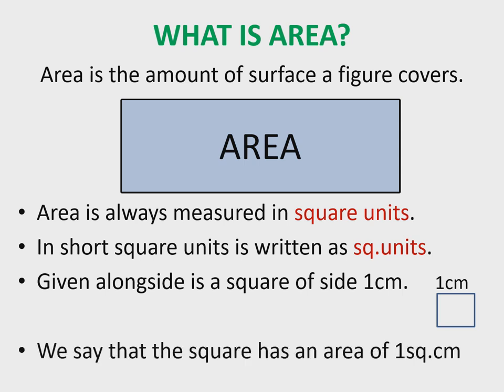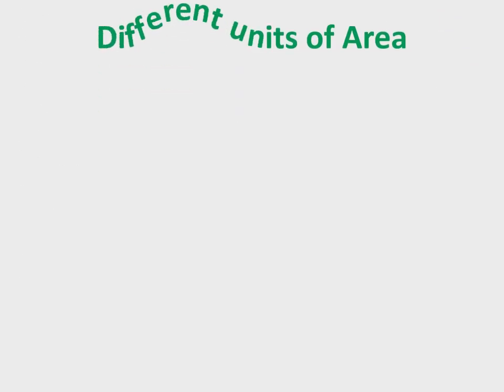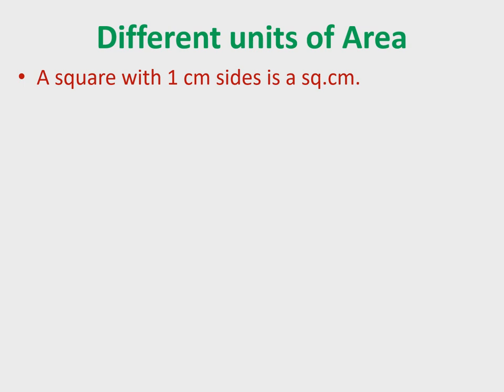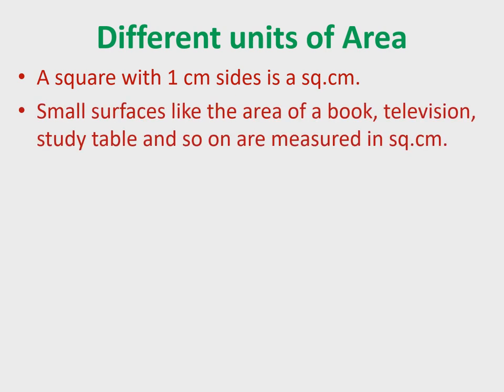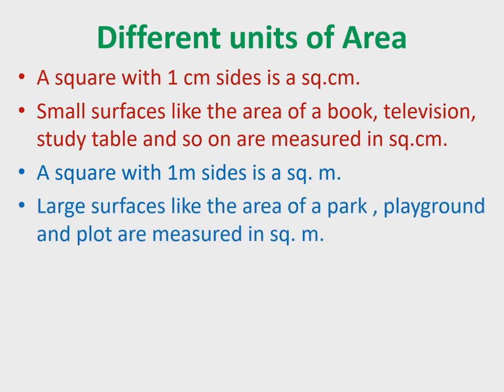Given alongside is a square of side one centimeter — it has an area of one square centimeter. Different units of area: a square with one centimeter sides is one square centimeter, used for small surfaces. A square with one meter sides is one square meter, used for larger surfaces like the area of a park, playground, or plot.